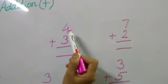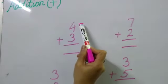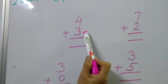Now, 4 plus 3. Upper number is 4 and lower number is 3.